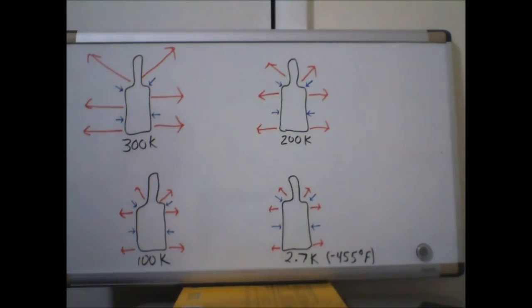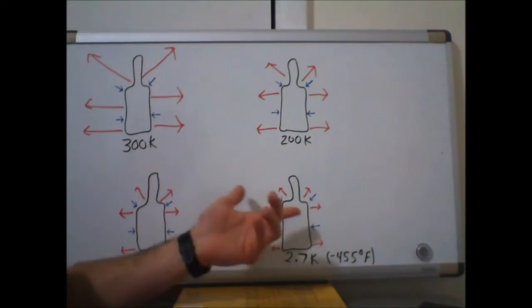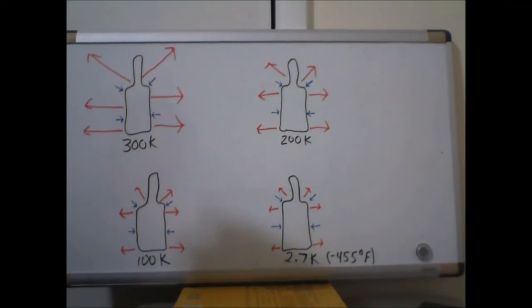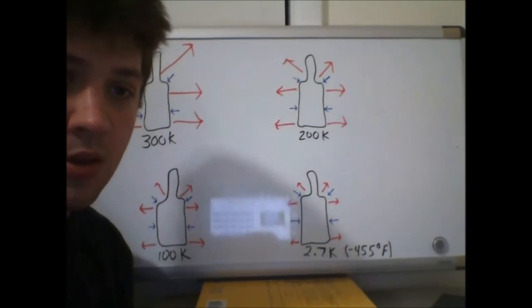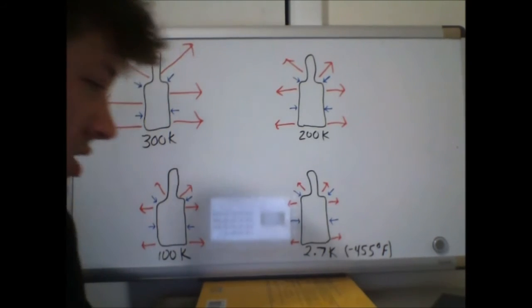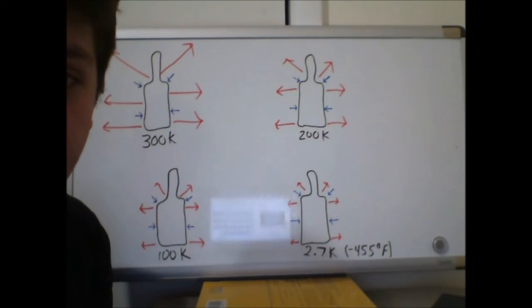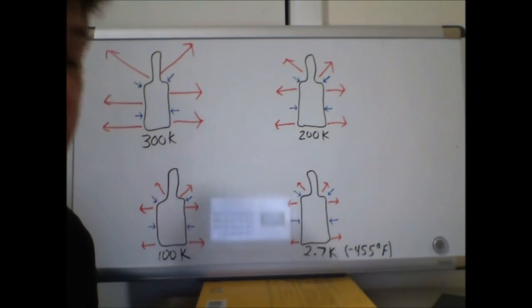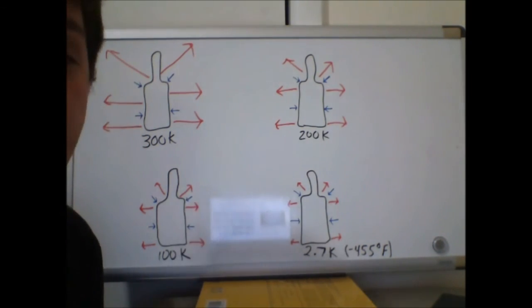This happens at the exact temperature of 2.7 kelvins, or negative 455 degrees Fahrenheit. That is where we get the temperature of space from. So once our beer bottle finally reaches that temperature of 2.7 kelvins, it's going to stay at 2.7 kelvins. That's the temperature at which our beer bottle reaches equilibrium, thermal equilibrium, with space.